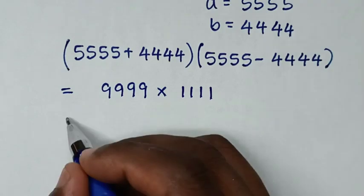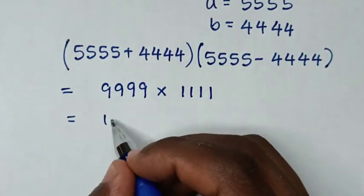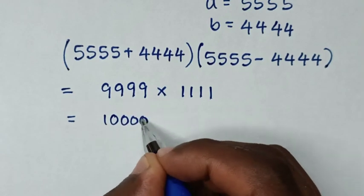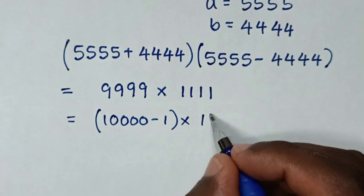Then it will equal 9999, which is the same as 10,000 minus 1, times 1111.